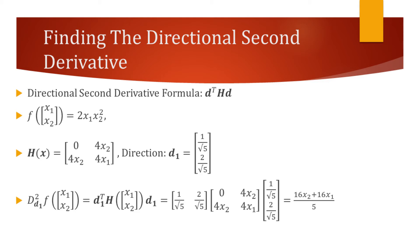Let's now use this formula and find the directional second derivative of a function which multiplies 2, the first element, and the squared second element of the input vector.